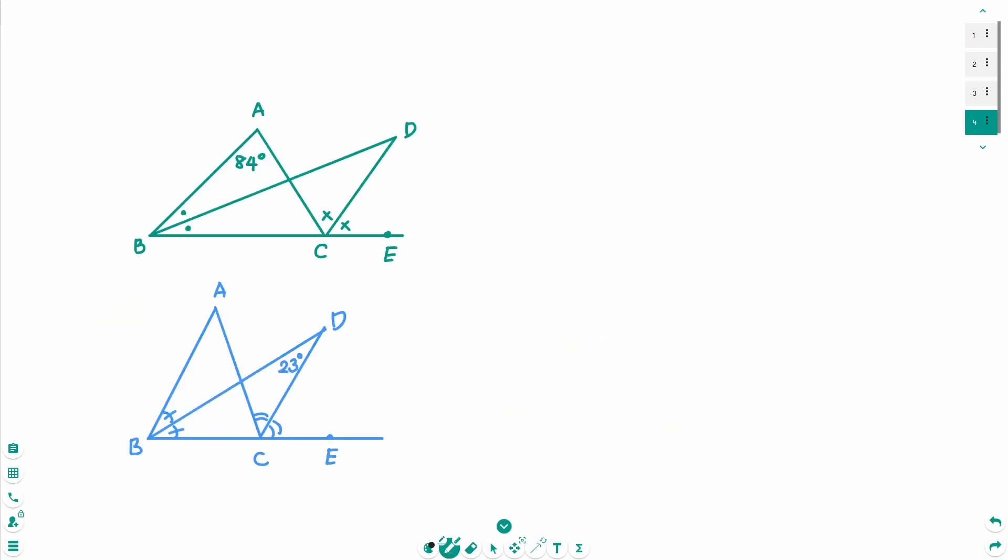Then, let's solve the problems to check. In here, angle D equals 84 degrees divided by 2, which is 42 degrees. How about the second one? Then, angle D is half of angle A. That means angle A equals double of angle D. So, 2 times 23 degrees, which is 46 degrees.